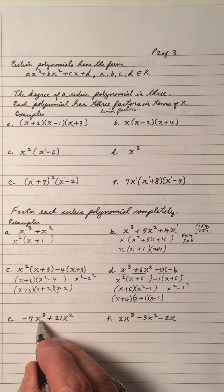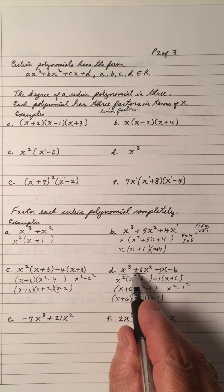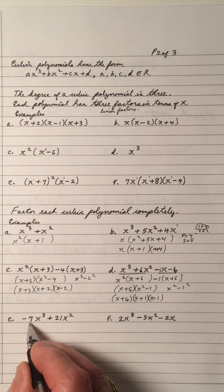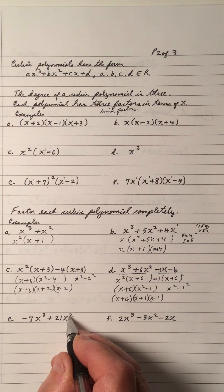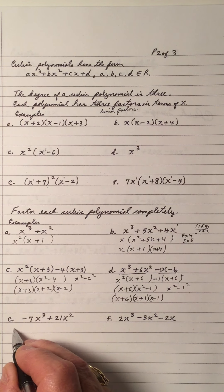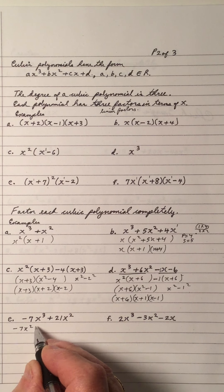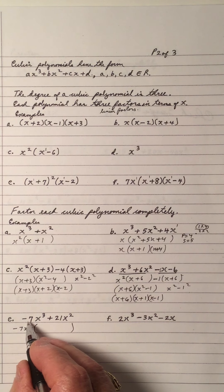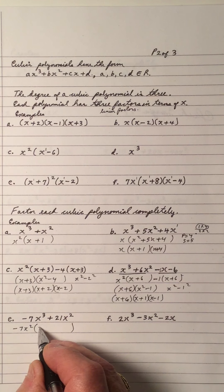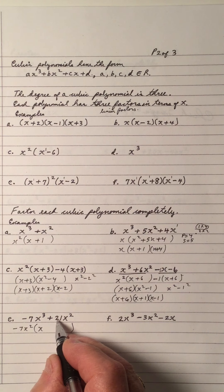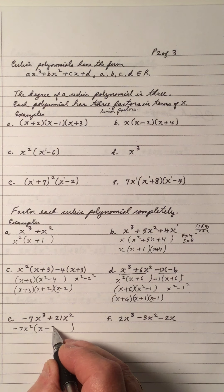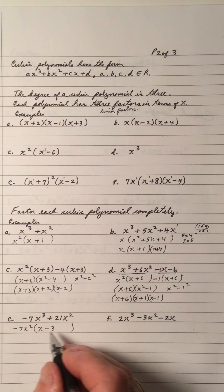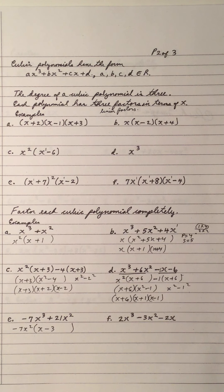Example E: I have a cubic in descending order with a negative and a 7. It's a numerical GCF and x squared is the literal GCF, so I'll take out negative 7x squared. Negative 7x cubed divided by negative 7x squared is x. Positive 21 divided by negative 7 is negative 3. x squared divided by x squared cancels. And that's fully factored.